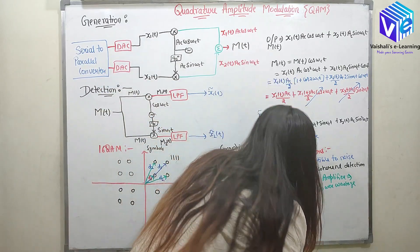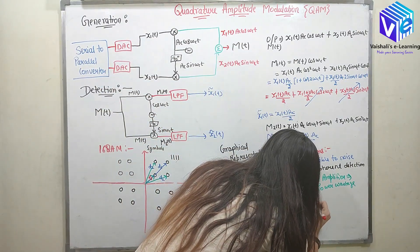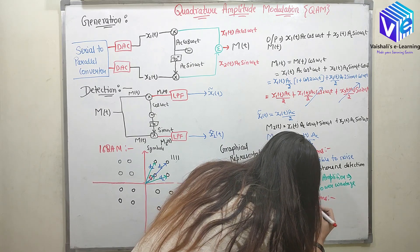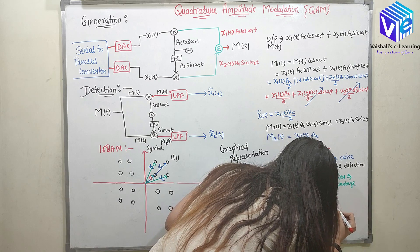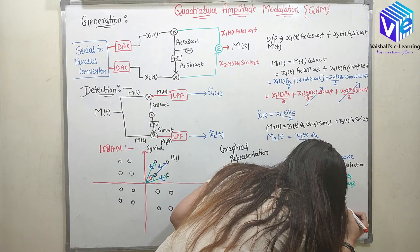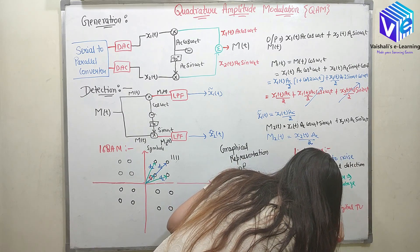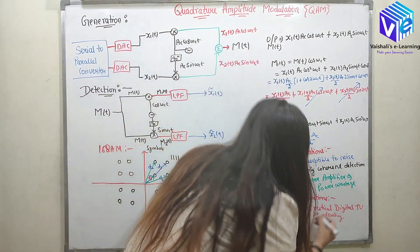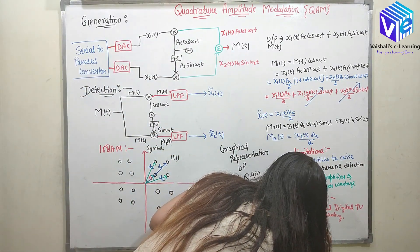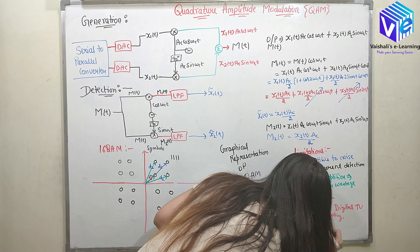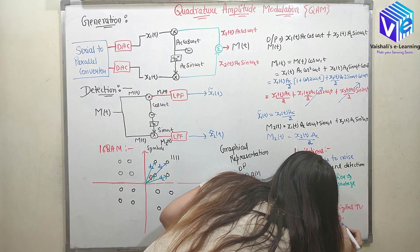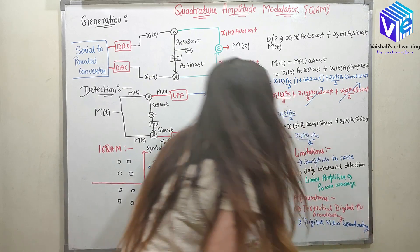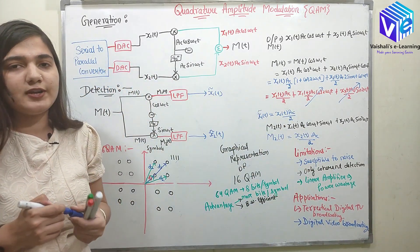Now talking about the applications. The first application is terrestrial digital TV broadcasting, or digital video broadcasting. These are the applications of QAM.